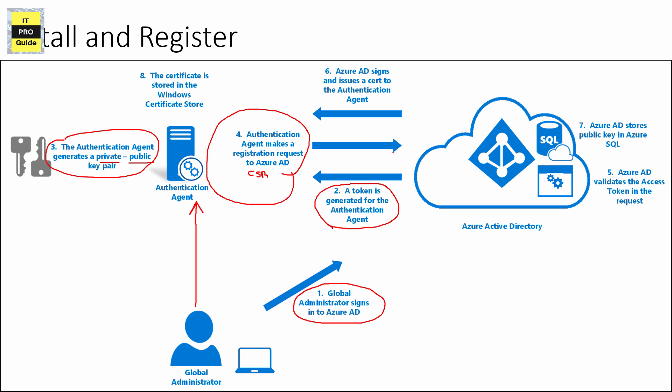Then Azure AD registers your authentication agent and provides a digital identity certificate issued by the Azure AD certificate authority. Azure AD stores the public key of the authentication agent in an SQL database in Azure, which only Azure AD has access to. The certificate issued by Azure AD is stored on the on-premises server in the Windows certificate store, and those certificates are used by the Windows authentication agent and updater application for communication with Azure AD.